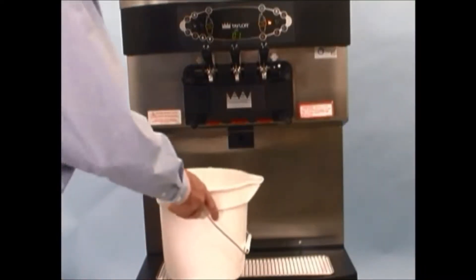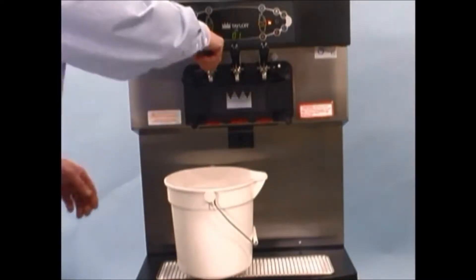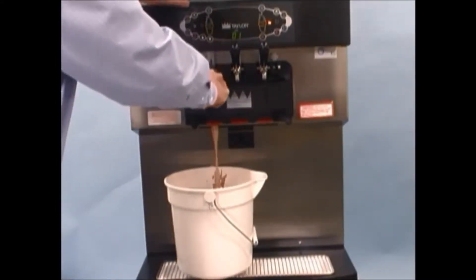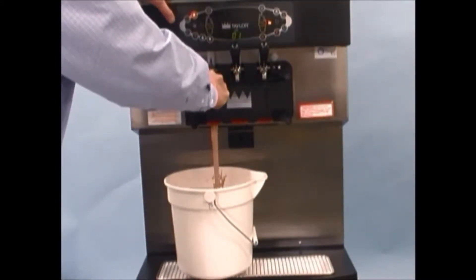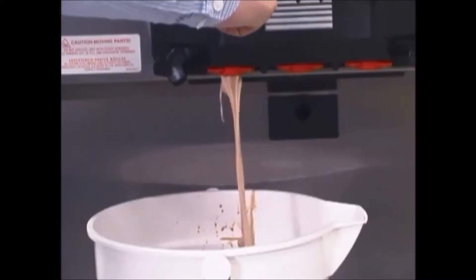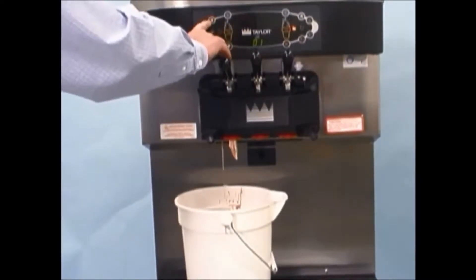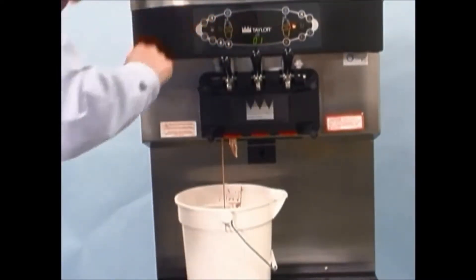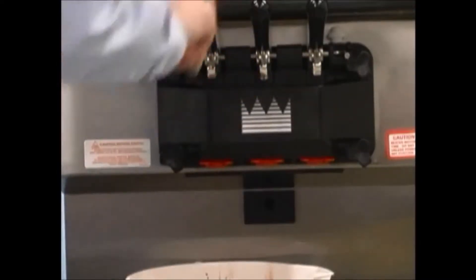With a pail beneath the door spouts, open the draw valve and press the wash and pump buttons. Drain the product from the freezing cylinder and the hopper. When the flow of product stops, press the wash and pump buttons, cancelling the wash and pump modes. Close the draw valve.